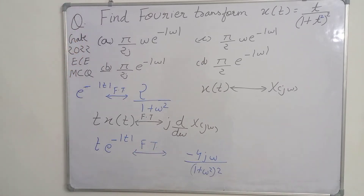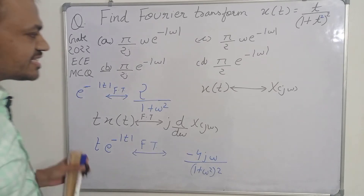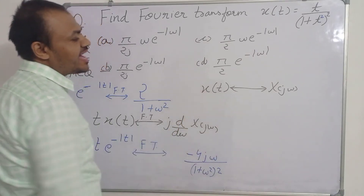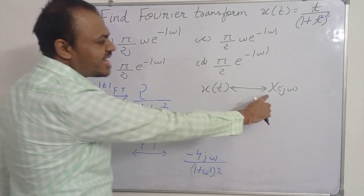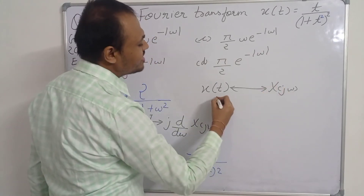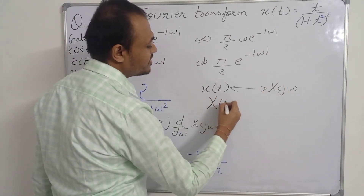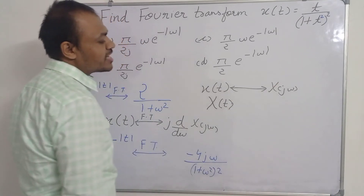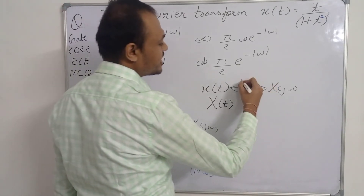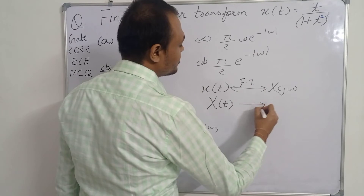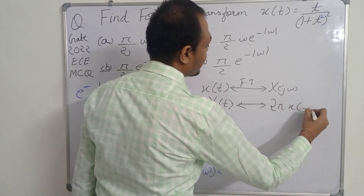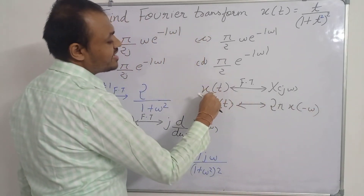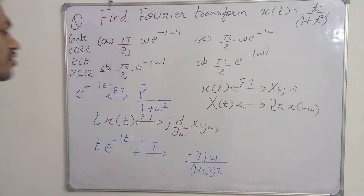Now we apply the duality property. The duality property says: if X(jω) is the Fourier transform of x(t), then replacing omega with t in X(jω) gives X(t), and the Fourier transform of X(t) is 2π · x(−ω). So we replace omega with t in our expression and then replace t with −ω.